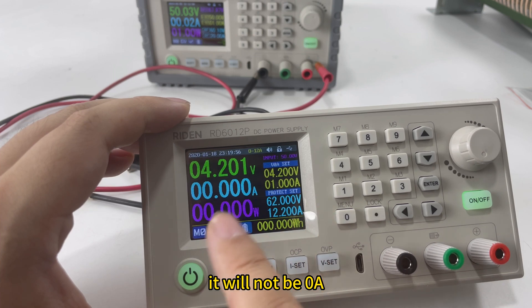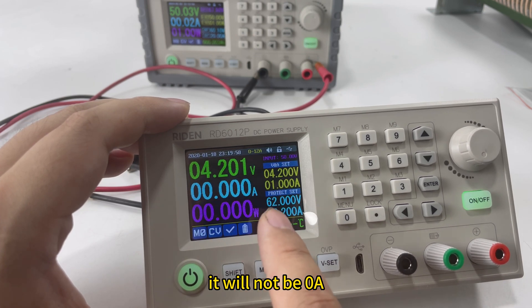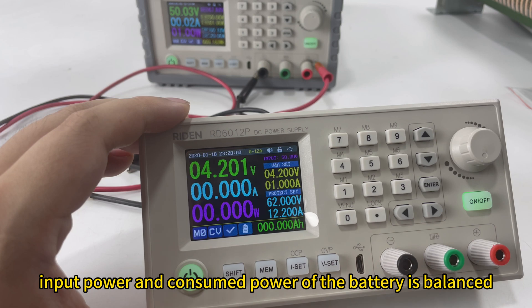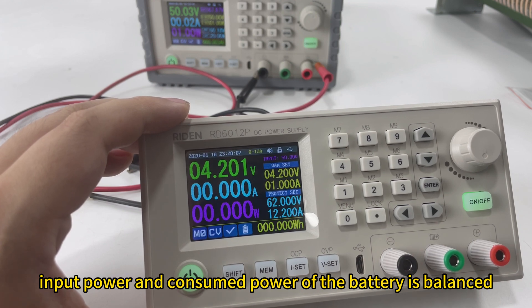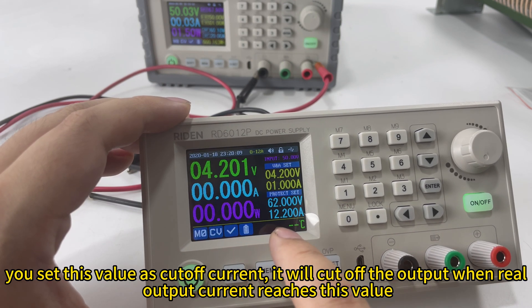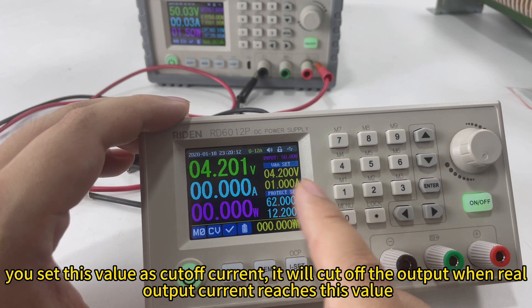Finally, there will be a very low current because the input of the battery and the consumption is balanced. Then, you can set this value as the cutoff current setting.